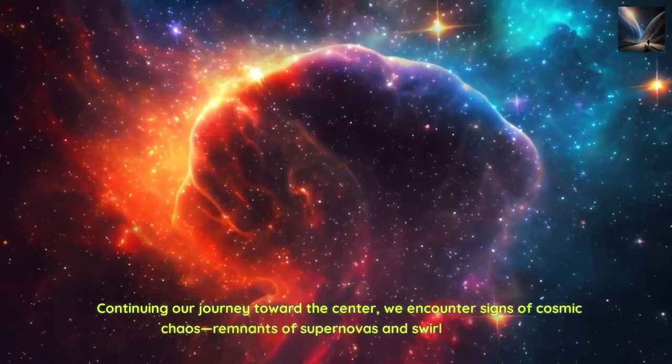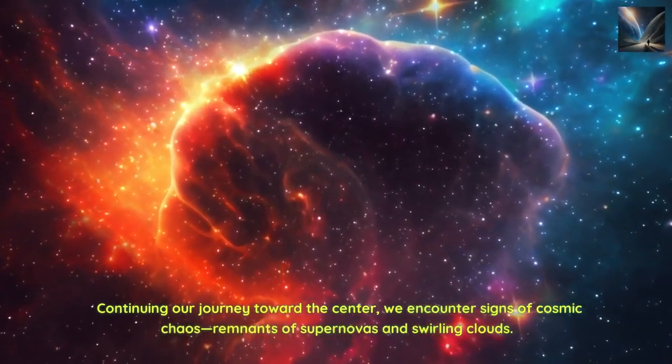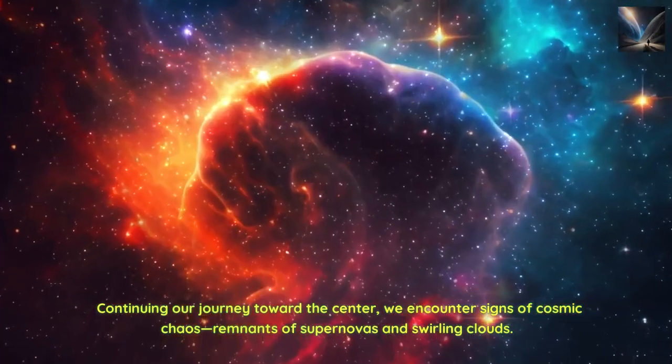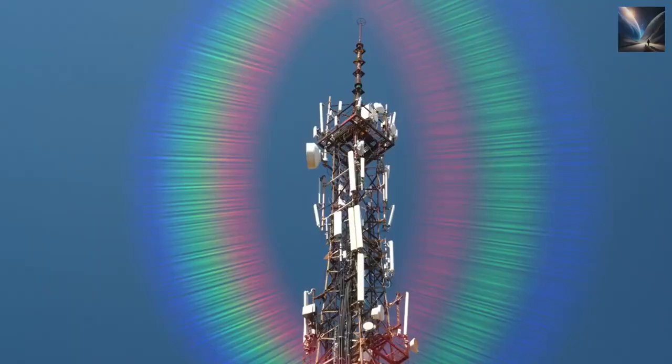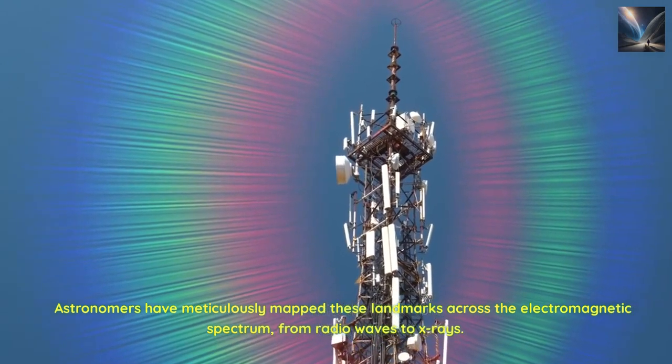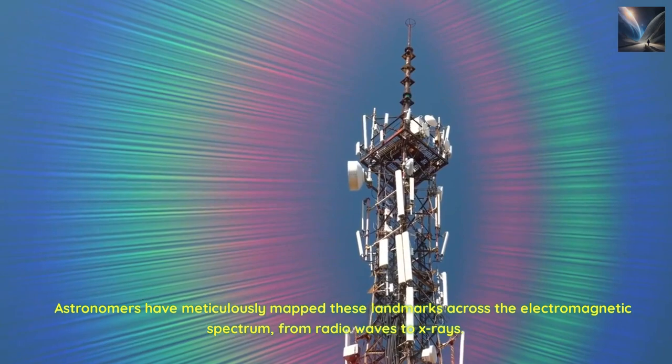Continuing our journey toward the center, we encounter signs of cosmic chaos, remnants of supernovas and swirling clouds. Astronomers have meticulously mapped these landmarks across the electromagnetic spectrum, from radio waves to X-rays.